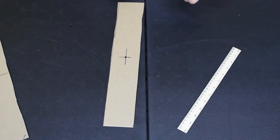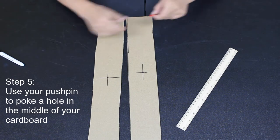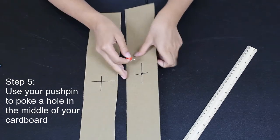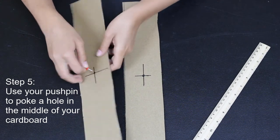Make a cross or intersecting lines because now you know the middle of those pieces of cardboard. Use your pushpin to poke a hole right where those two lines intersect.